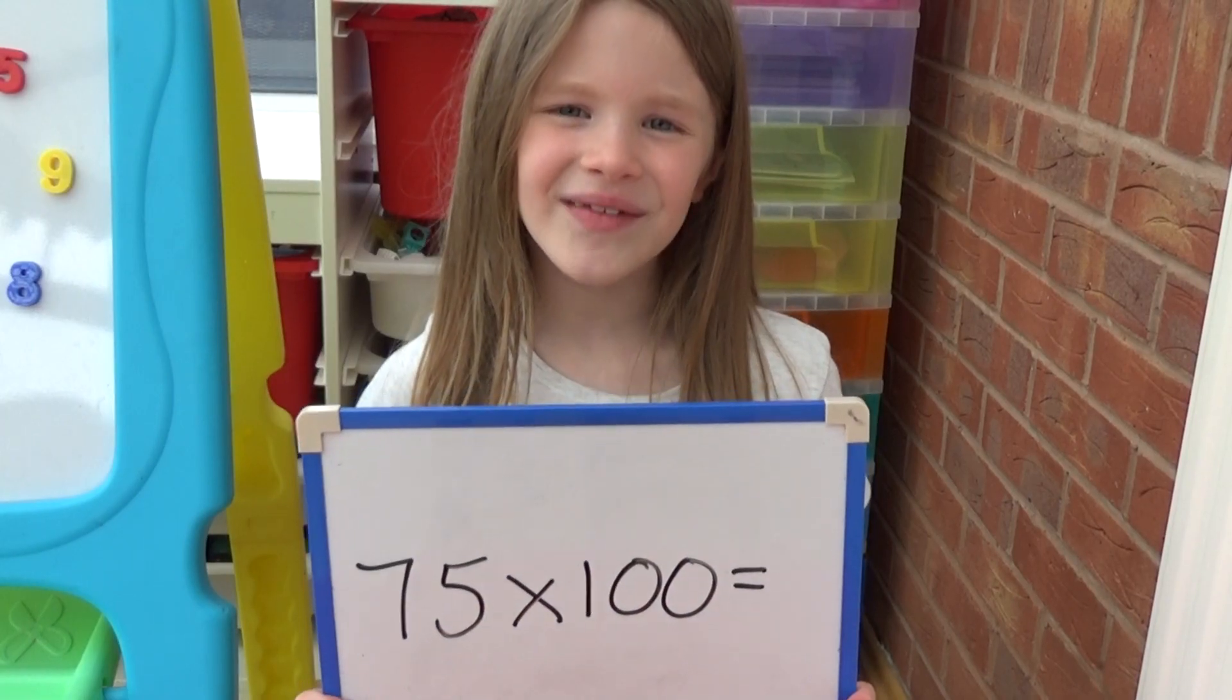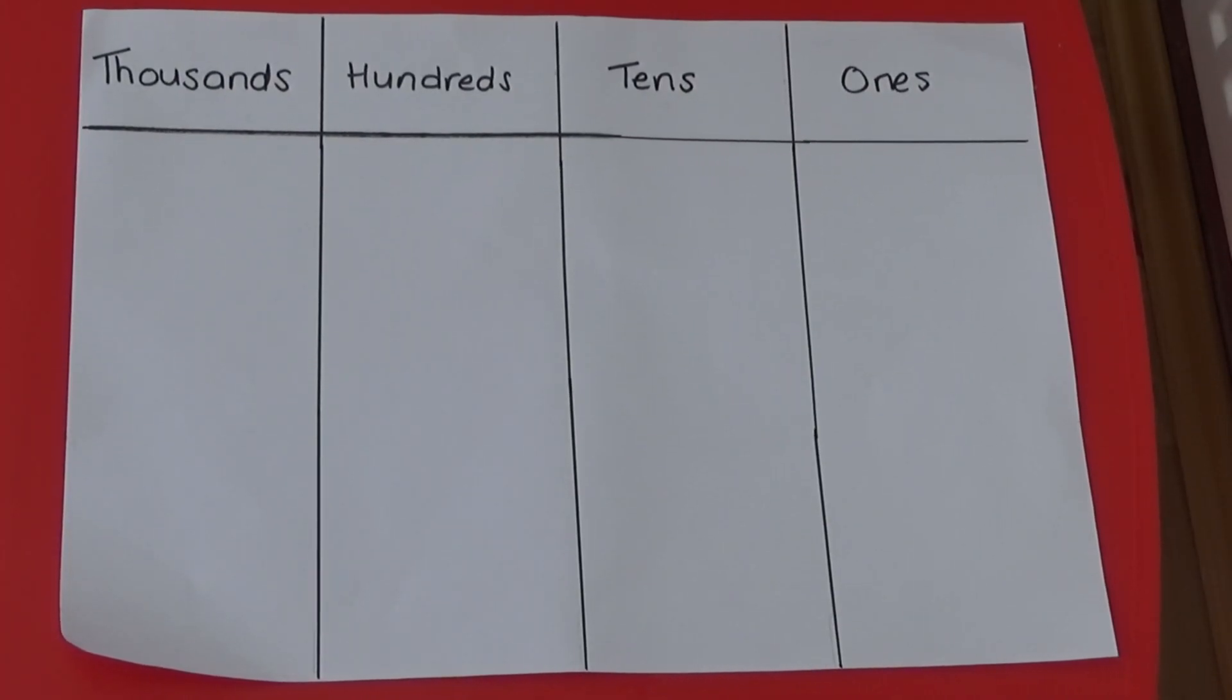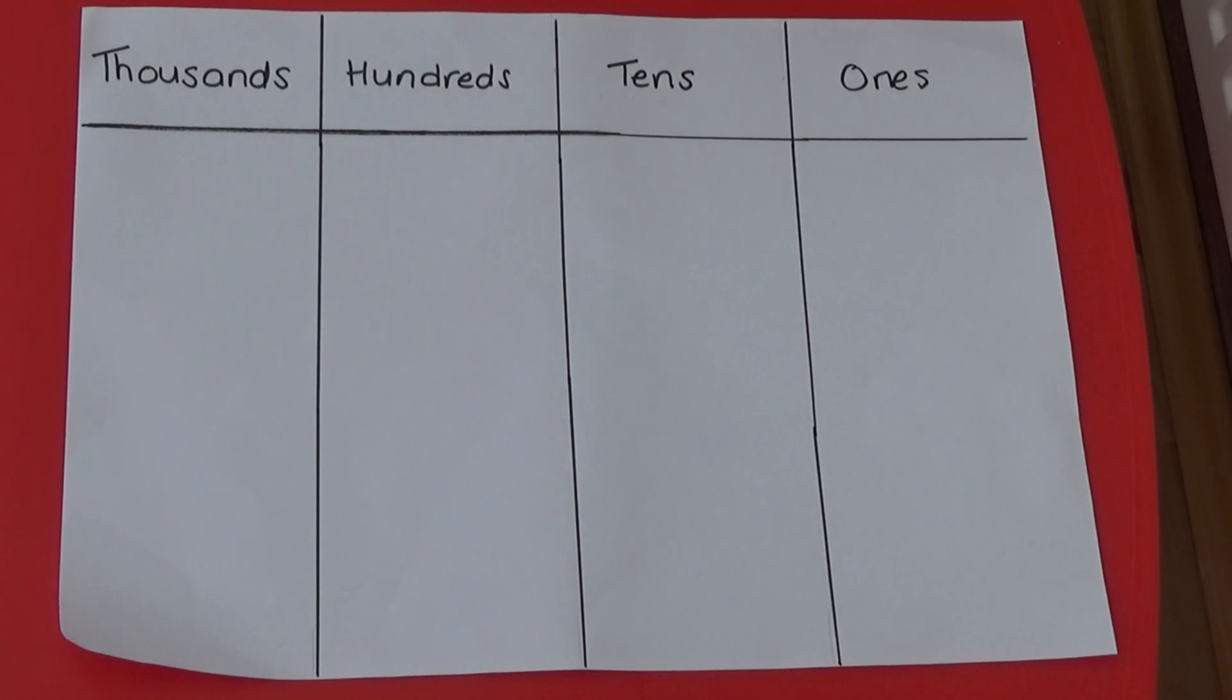Let's look at 75 multiplied by 100. I'm going to partition the 75 into 10s and 1s.